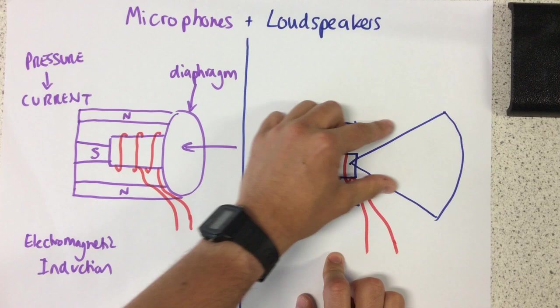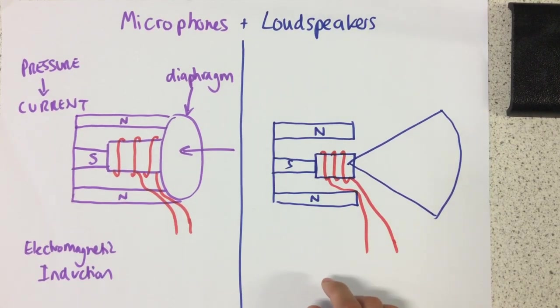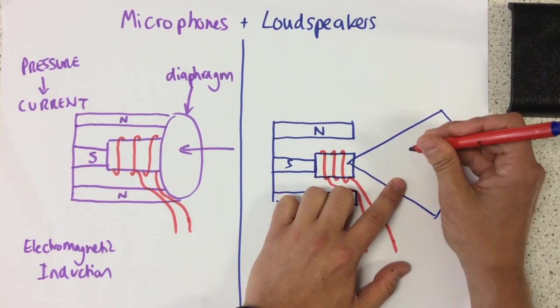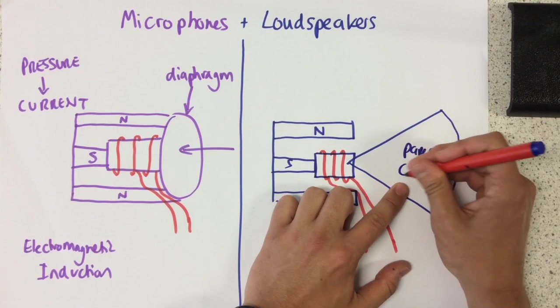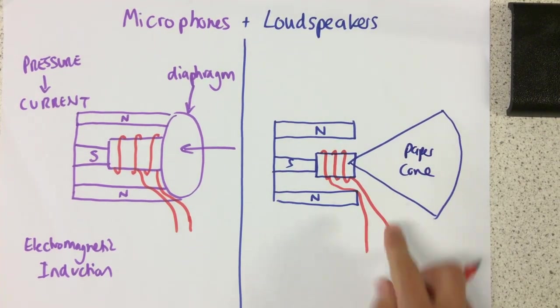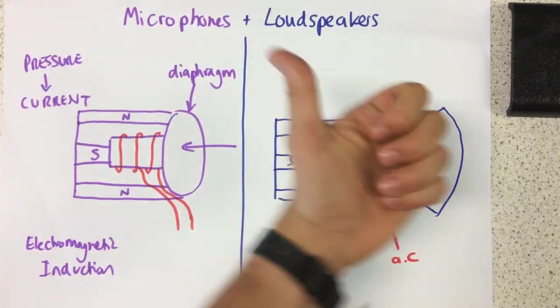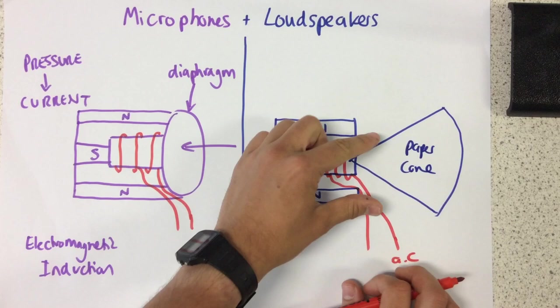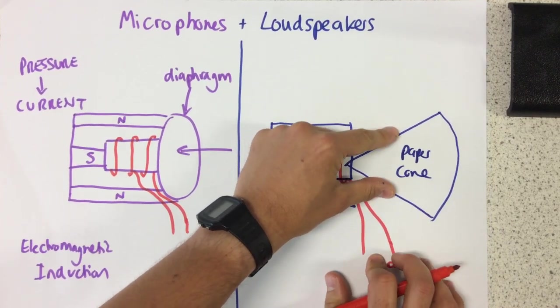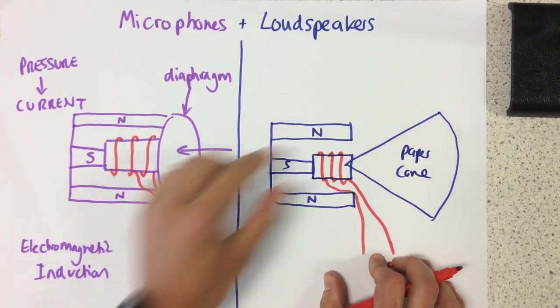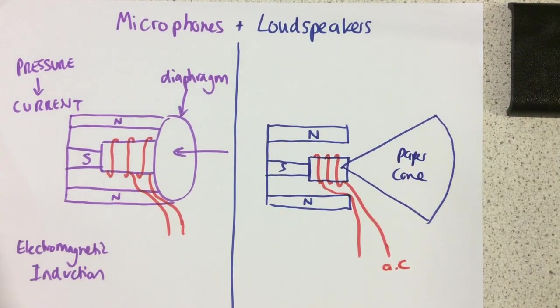And that force is what is moving this backwards and forwards. All this is here is a paper cone. Because it's an alternating current, it means that the force is going to constantly be changing direction. That's what allows this paper cone to move backwards and forwards to create vibrations.